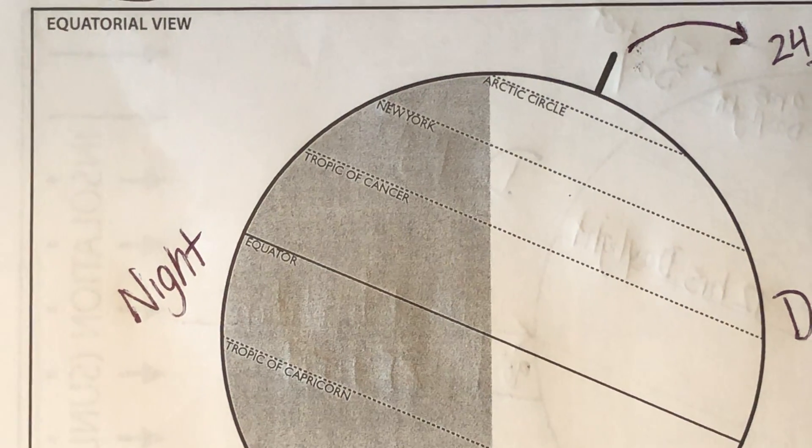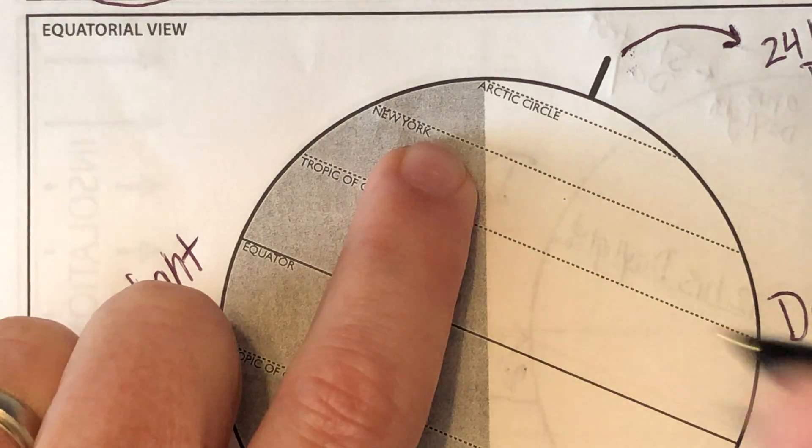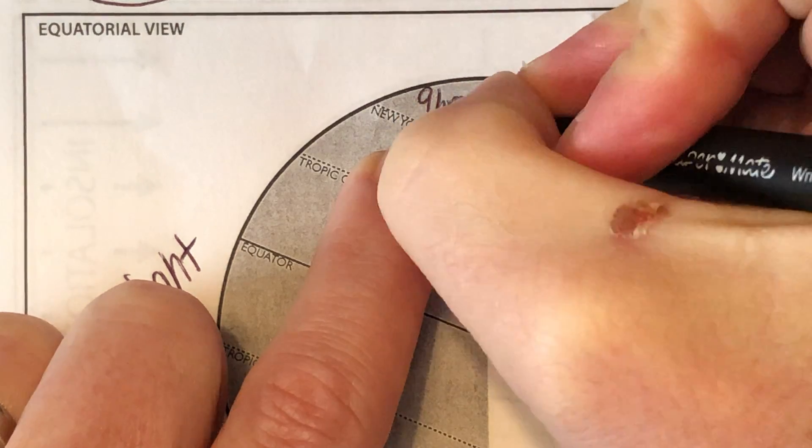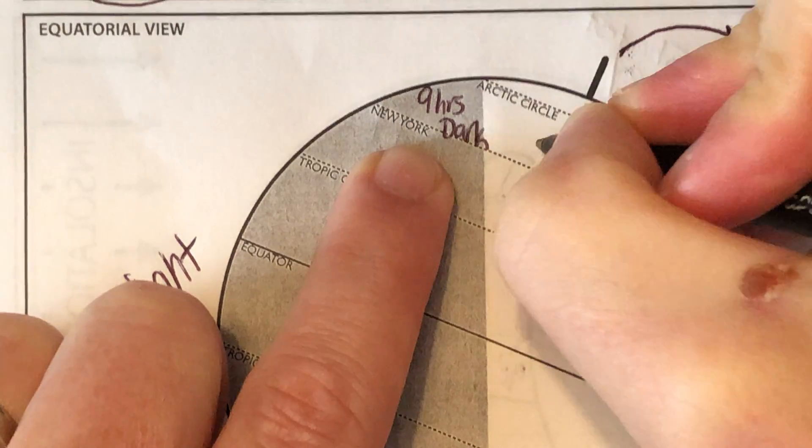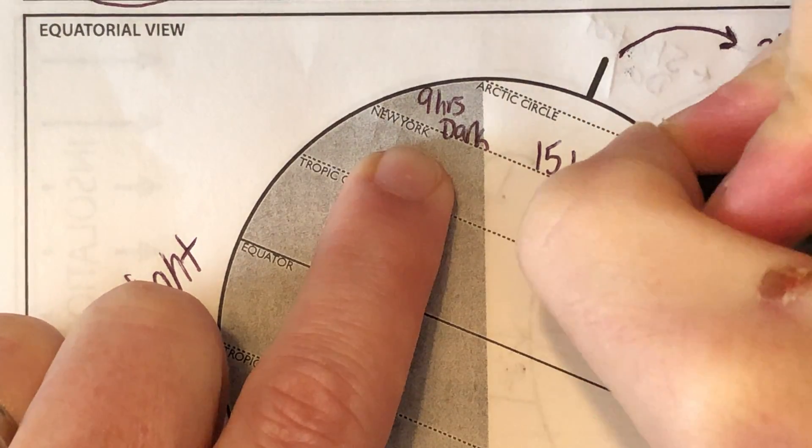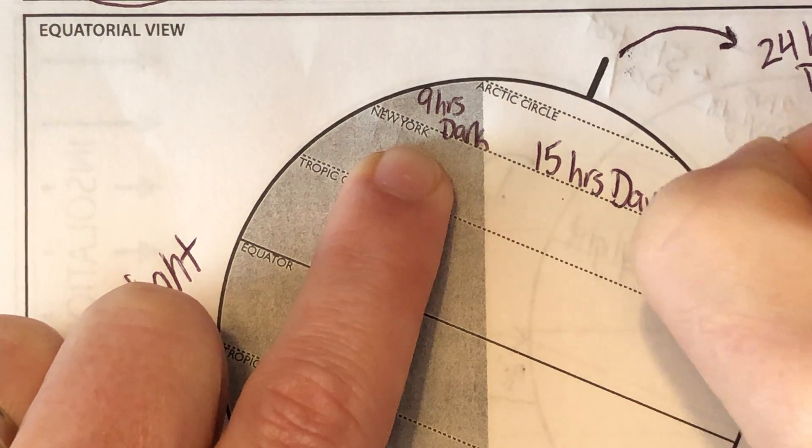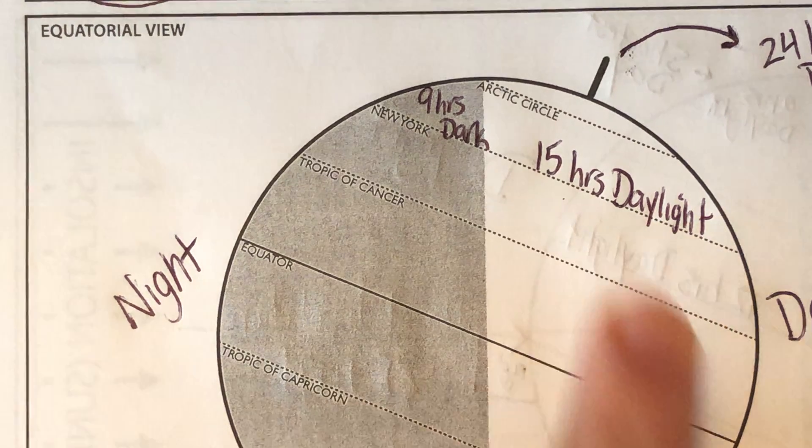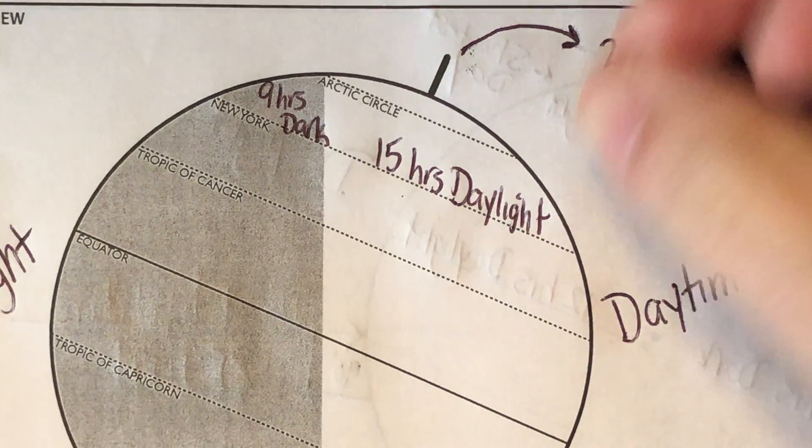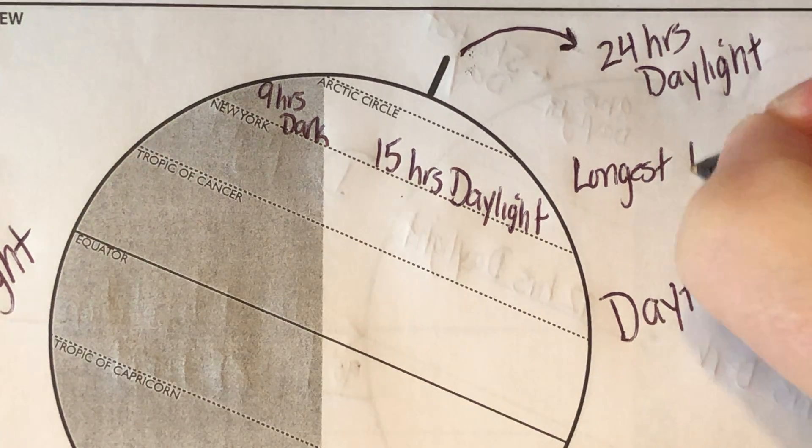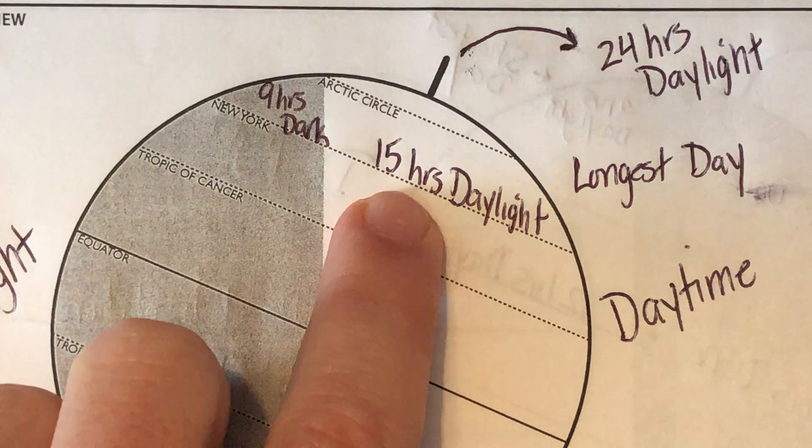If you looked at my other video, New York was flipped the exact opposite. Now it's nine hours of dark and 15 hours of daylight. This is our longest day of the year.